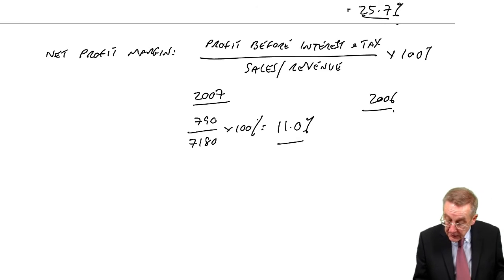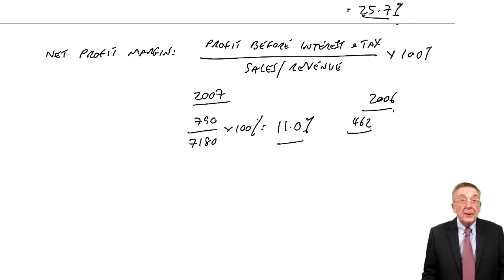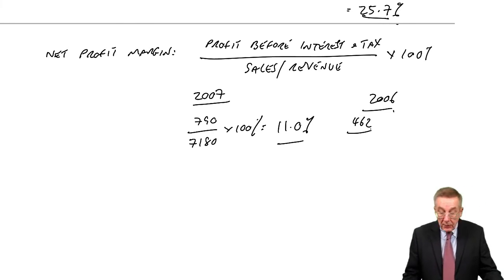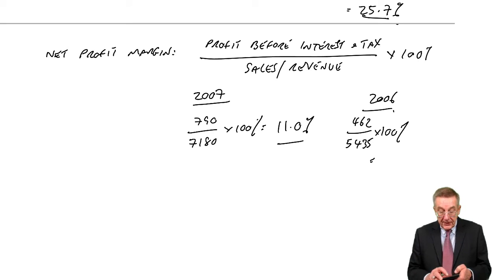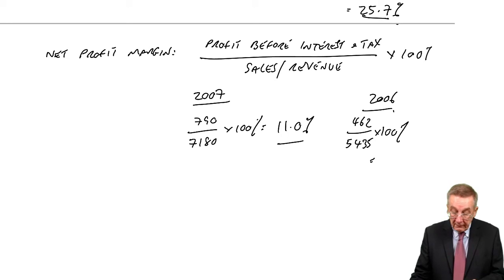In 2006, what was it? The profit was a lot less at 462. But of course, the revenue, the sales, were a lot less at 5435. So more importantly, in percentage terms, it was 8.5%.